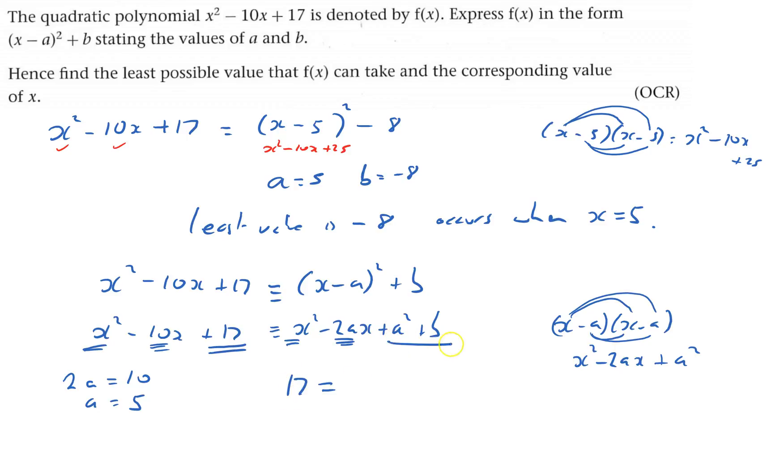And the bits with the numbers, 17 equals a squared plus b. So 17 equals a squared is 25 plus b,